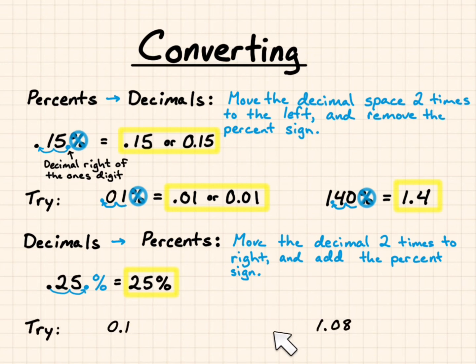0.1 and 1.08. For 0.1, I'm going to move the decimal place twice to the right. I have a void right here, and you add a 0 in it. Then you also add the percent sign. You get 10%. For 1.08, move the decimal place twice to the right, and add the percent sign. It's 108%. Next topic is going to be fractions to percents.